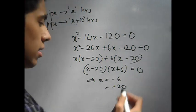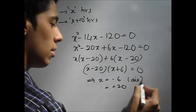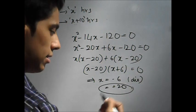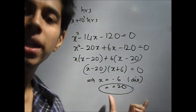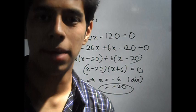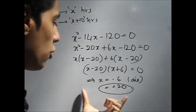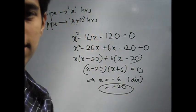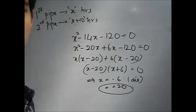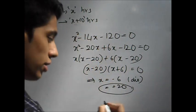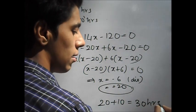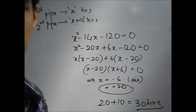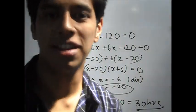This implies that x is either minus 6 or x is equal to plus 20. Now we know that time can't be negative, so this is discarded. This is your answer. Now this is a very important thing. This answer will be there in the options and most of you will mark them. The problem is that they have not asked you in how much time the first pipe fills. They have asked you in how much time the second pipe fills, and that is x plus 10. So the actual answer will be 20 plus 10 hours. So this will be 30 hours.